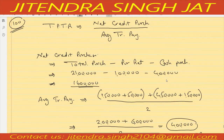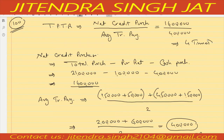Trade payable turnover ratio: net credit purchase 16 lakh divided by average trade payable 4 lakh equals four times. Trade payable turnover ratio is four times — it means that in one year we pay to the creditors four times. This is what the capacity of the business is. If we are paying five or six times, the capacity is more.